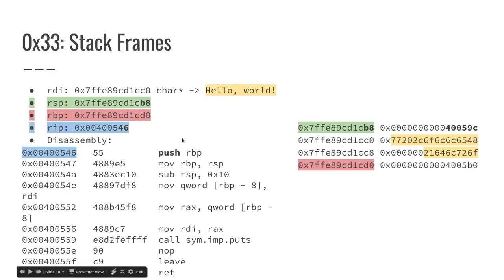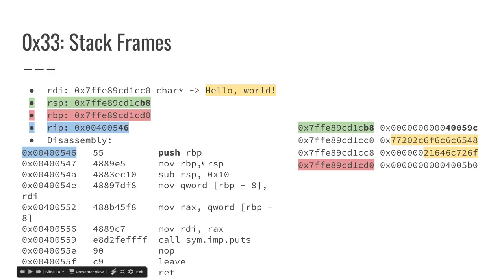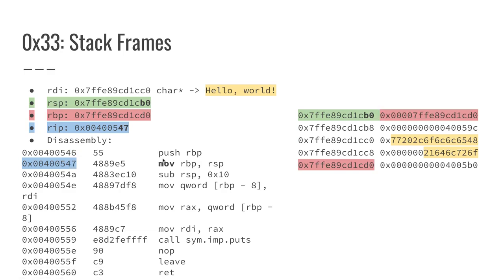The instruction pointer got updated to main's first instruction, which is this 55 byte. Every instruction is really there just to get closer to whatever the function is doing — in our case, getting to puts, which will print hello world to the screen. The first three instructions are the function prologue, which sets up a brand new stack frame. To set up a new stack frame, you first save the current base pointer onto the stack by pushing it, then move the base pointer to equal the stack pointer.